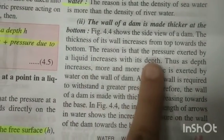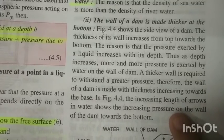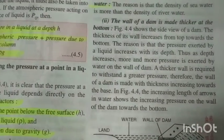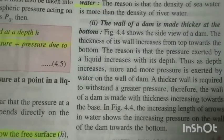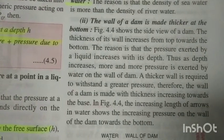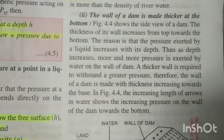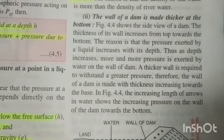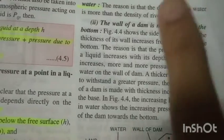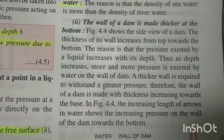Second consequence: the wall of a dam is made thicker at the bottom — and I can guarantee your teacher will give questions from here. The reason is that pressure increases with depth. The dam holds water, and the deeper you go, the greater the pressure — so the wall must be thicker at the bottom to withstand that greater pressure.